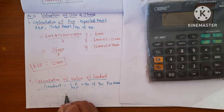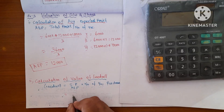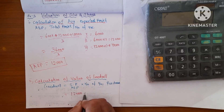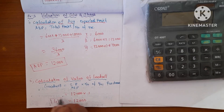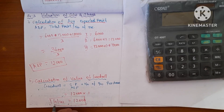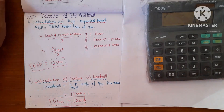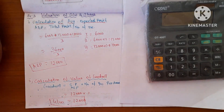Goodwill equals average profit into number of years purchase, so 12,000 × 1 = $12,000. Goodwill is $12,000. Please share and subscribe. Thank you for watching.